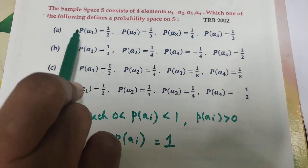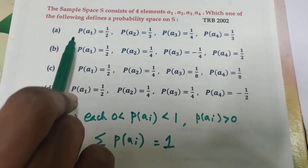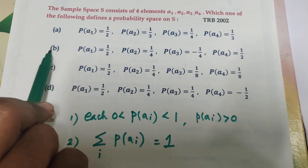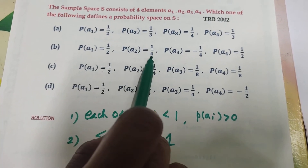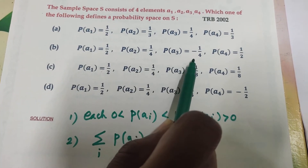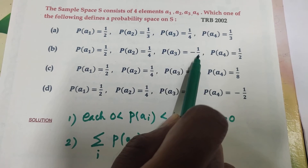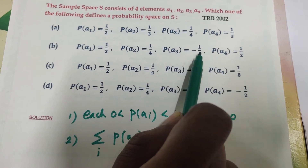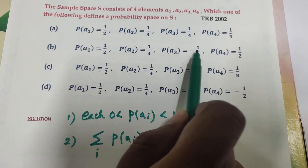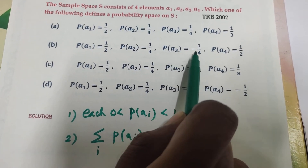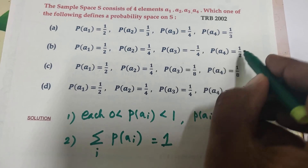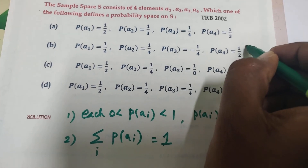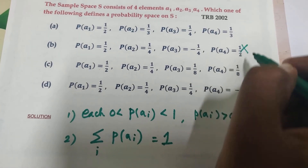Now we look at option B: a1 = 1/2, a2 = 1/4, a3 = -1/4. There is one negative value here. Since probabilities cannot be negative, this option is eliminated.